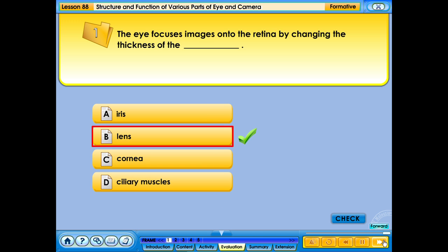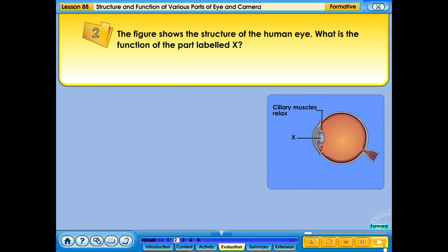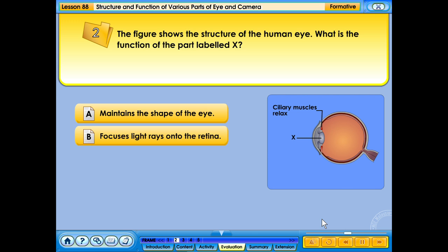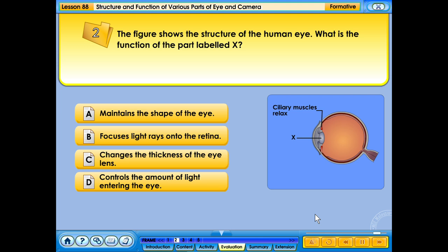The figure shows the structure of the human eye. What is the function of the part labelled X? A. Maintains the shape of the eye. B. Focuses light rays onto the retina. C. Changes the thickness of the eye lens. D. Controls the amount of light entering the eye. Your answer is correct.